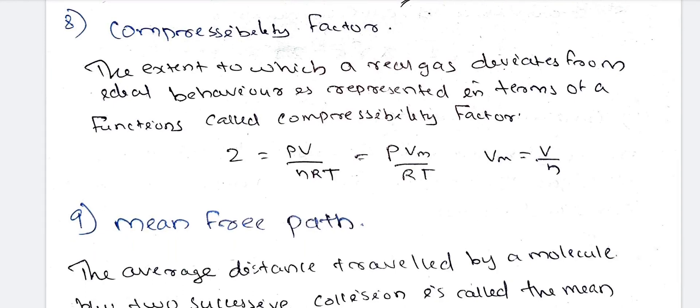The extent to which a real gas deviates from ideal behaviour is represented by the compressibility factor Z, where Z = PVₘ/RT and Vₘ = V/n. For an ideal gas, Z equals 1. The compressibility factor has a defined limit, representing real gas deviation from ideal behaviour.